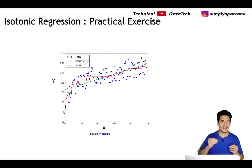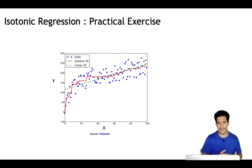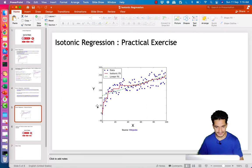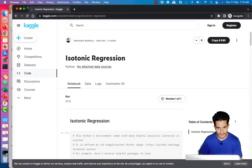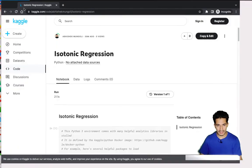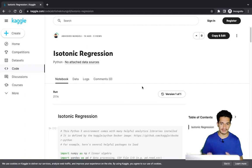Next we'll do a practical exercise where we take some data with a linear pattern, fit a linear regression to it, fit an isotonic regression to it, and see the difference. This is a Kaggle notebook and I'll make the link available in the description section.